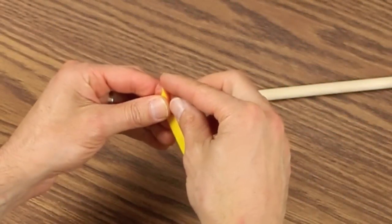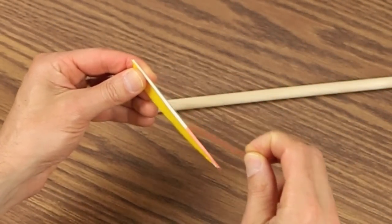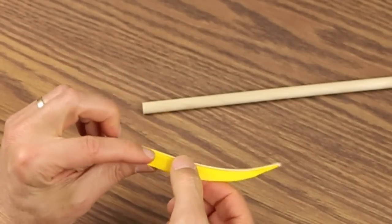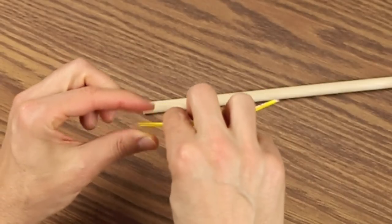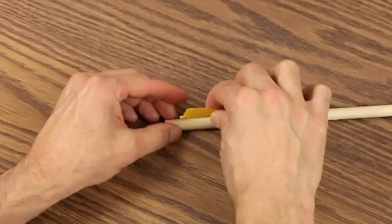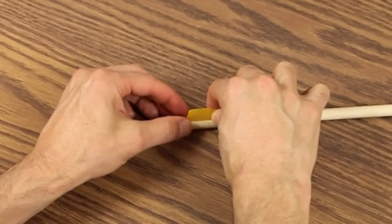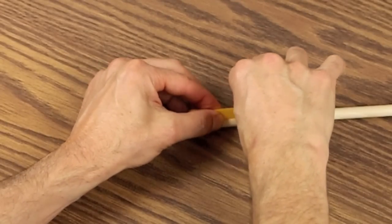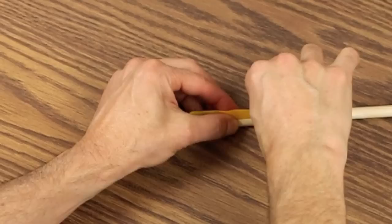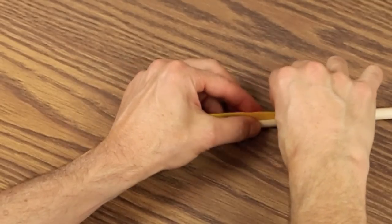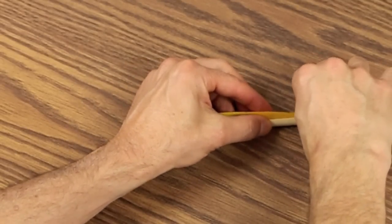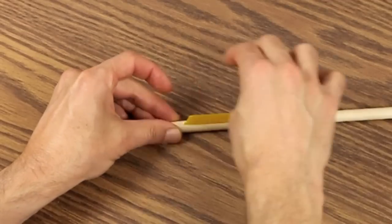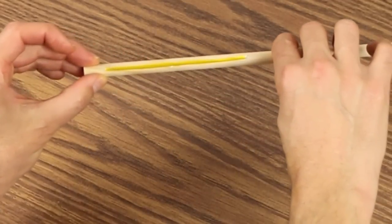Once you have the tape on, simply peel back the red, and now the surface is sticky. Notice the curve, you're going to straighten this out as you apply it to the arrow. So simply start at the back, press it down, and continue moving forward, straightening as you go. And there you have it.